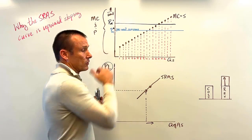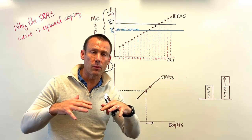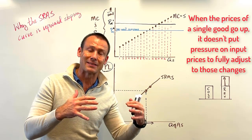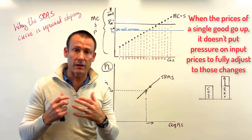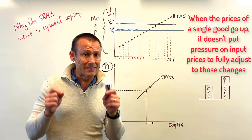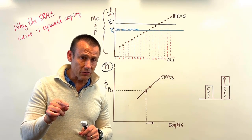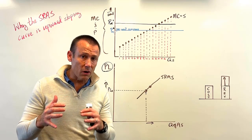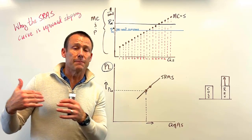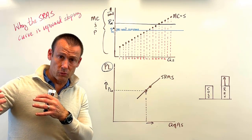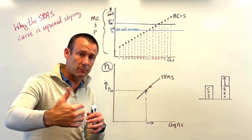Back to a single product: when the price of a single product goes up, it's not going to put enough upward pressure on input prices to force them to fully adjust. Put another way, when the price of a single product goes up, the value of the dollar does not change. But when the price level goes up, that dollar value begins to go down, and inputs to production will see their real income going down, so they'll agitate for higher income levels.